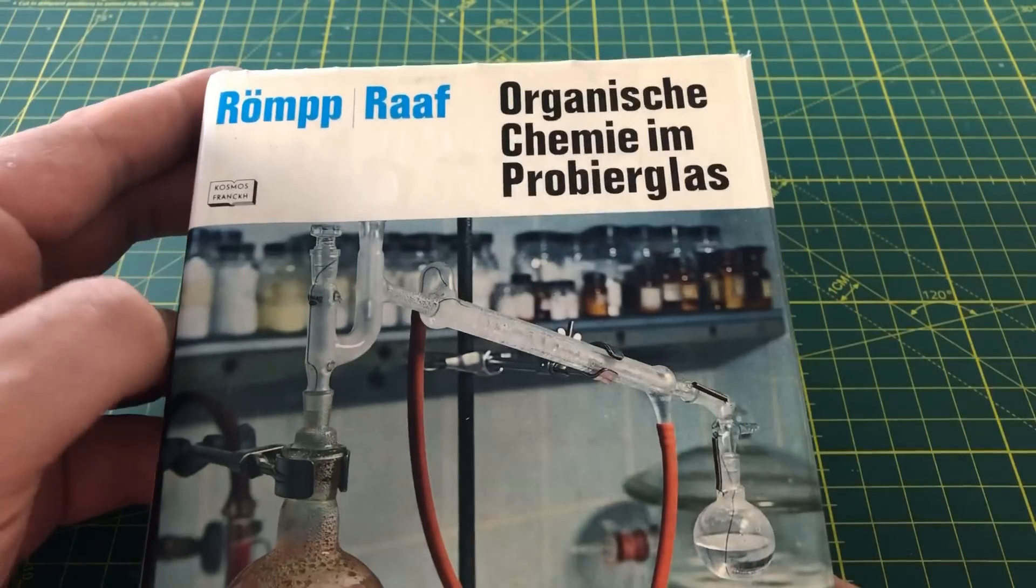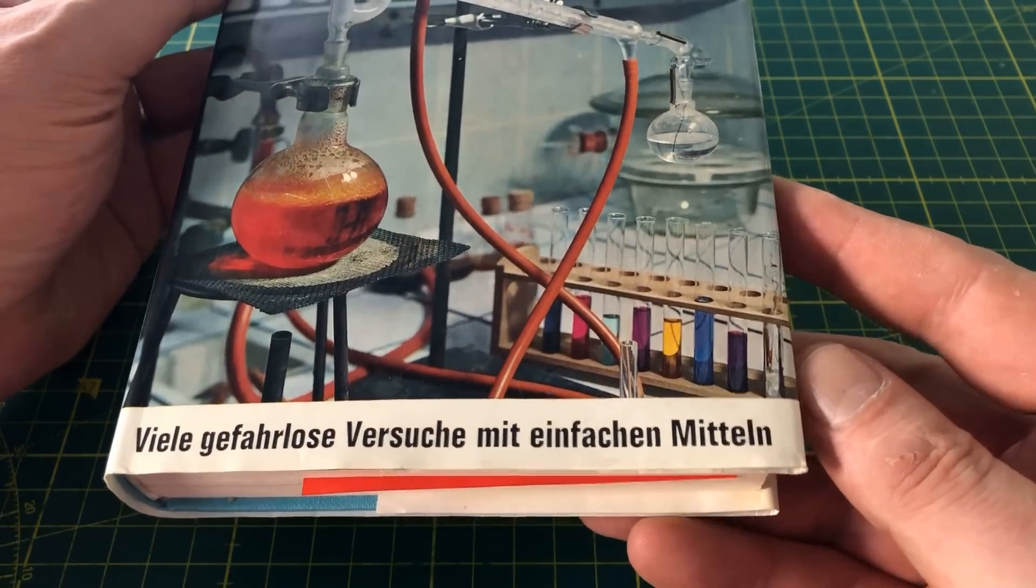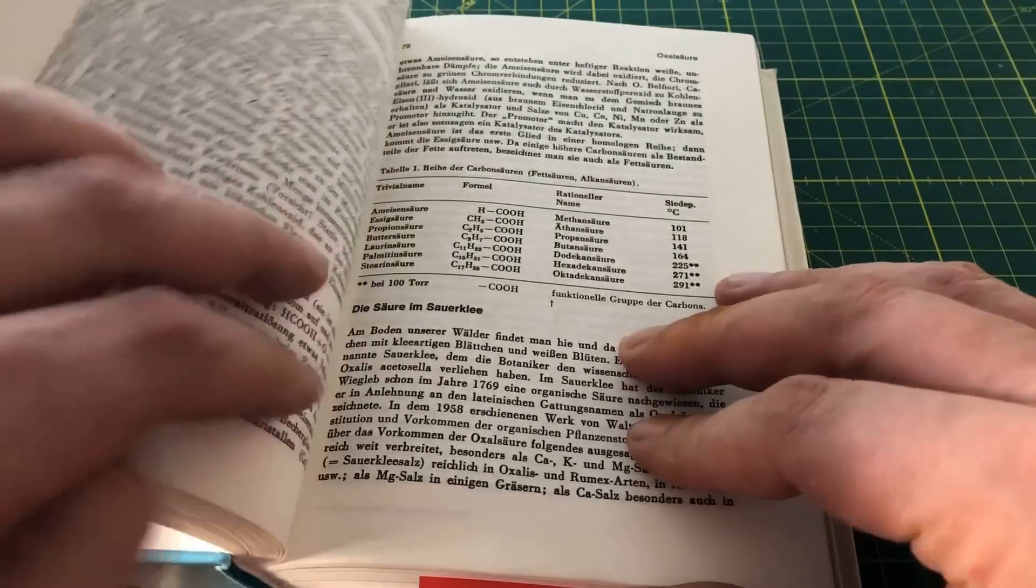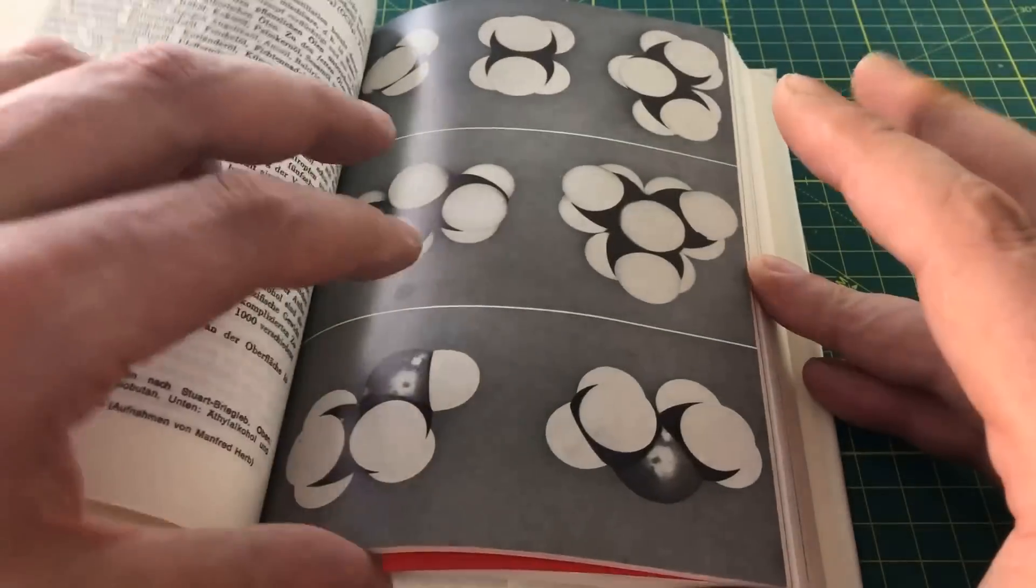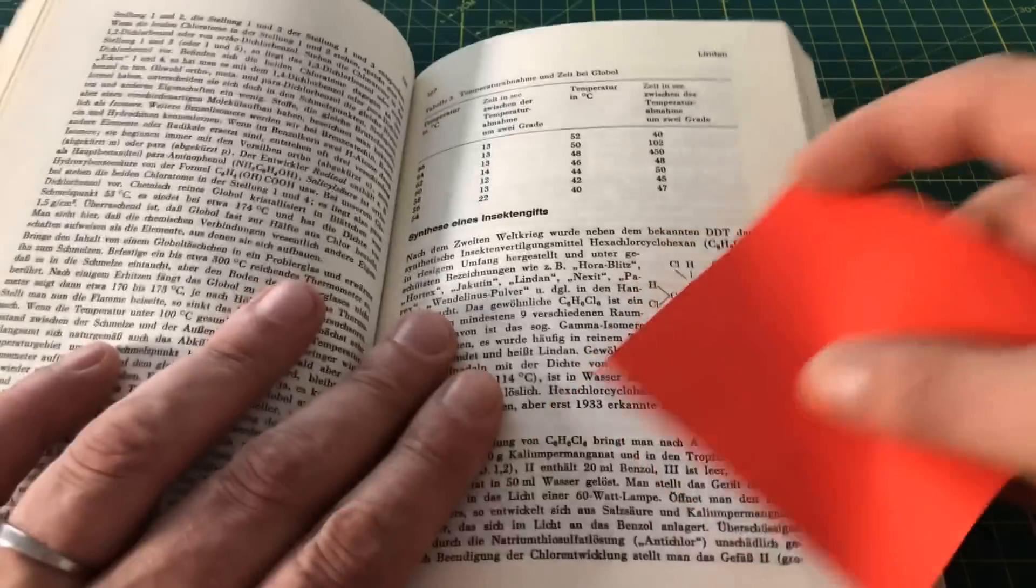I have owned this chemistry book since I was a teenager. Over time, I have replicated all the experiments in the book, except for one: the synthesis of an insecticide, namely lindane, also known as gamma-hexachlorocyclohexan.